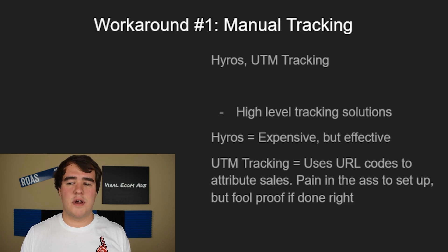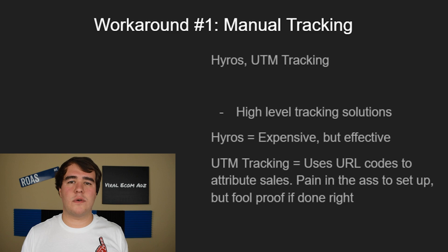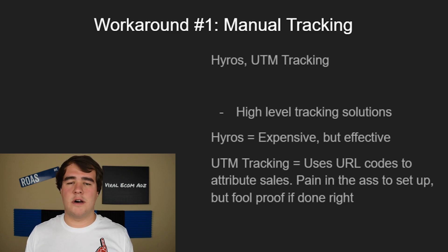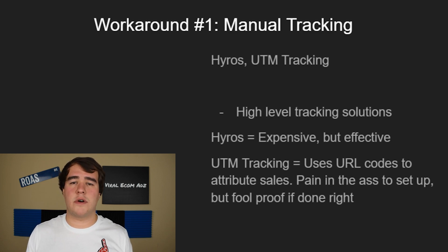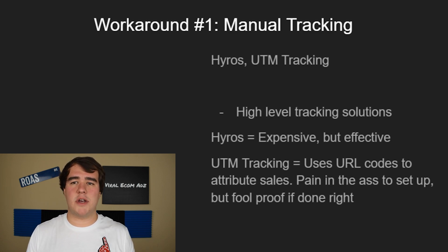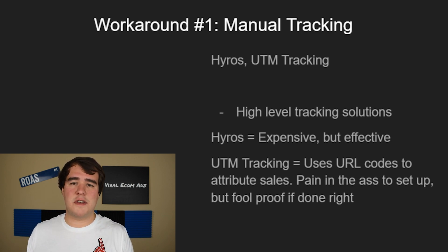The number one workaround that I've seen work the best so far is manual tracking. This is essentially creating your own pixel. You can do this with an app called Hyros, or you can do this with UTM tracking, which is essentially a bunch of URL code. These are usually very high-level solutions — if you're pushing a lot of revenue and managing a lot of stores, it would be worth investing the time and money into building these systems so you know exactly what's tracking, when and where.